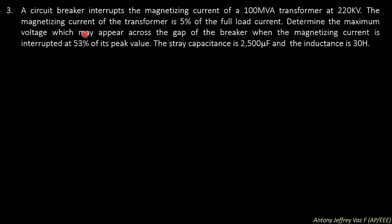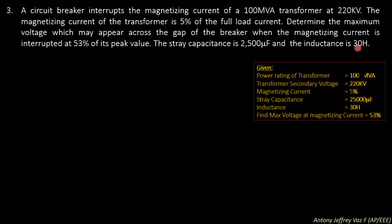Third question. A circuit breaker interrupts the magnetizing current of a 100 MVA transformer at 220 kV. The magnetizing current of the transformer is 5% of the full load current. Determine the maximum voltage which may appear across the gap of the breaker when the magnetizing current is interrupted at 53% of its peak value. The stray capacitance is 2500 microfarad and the inductance is 30 Henry.